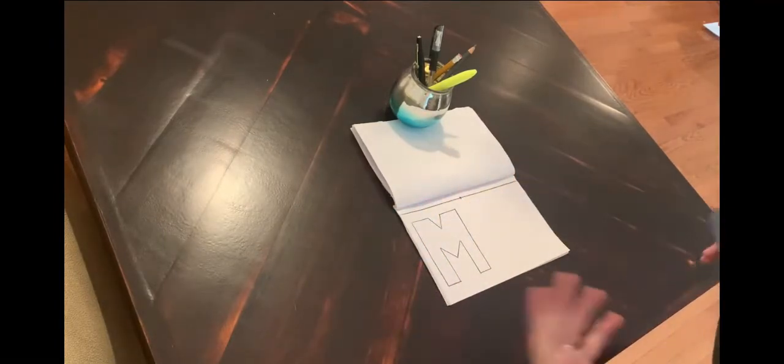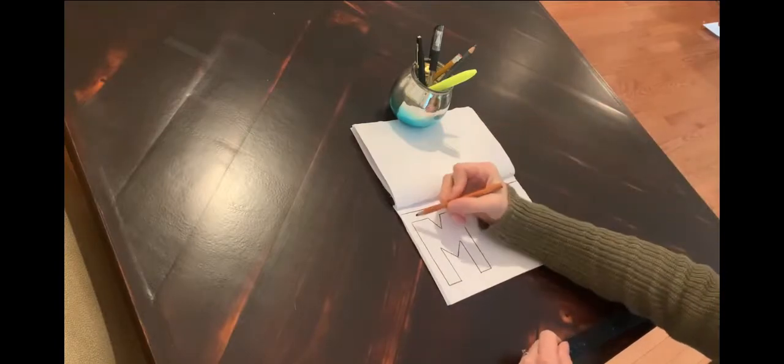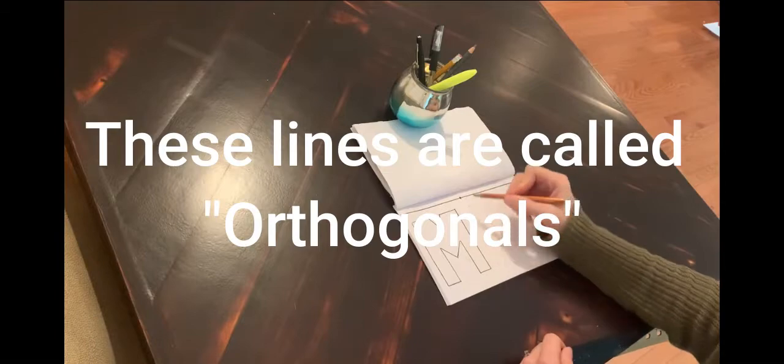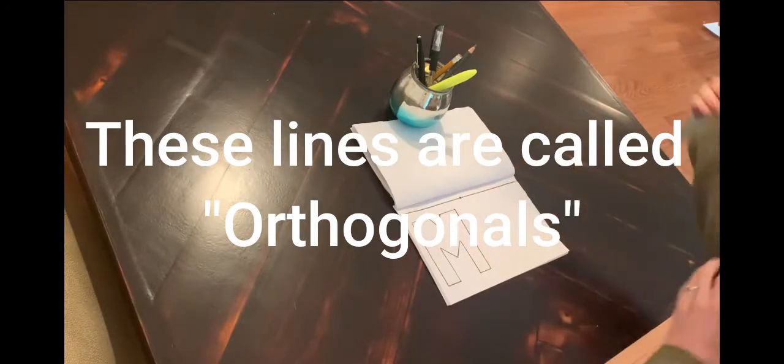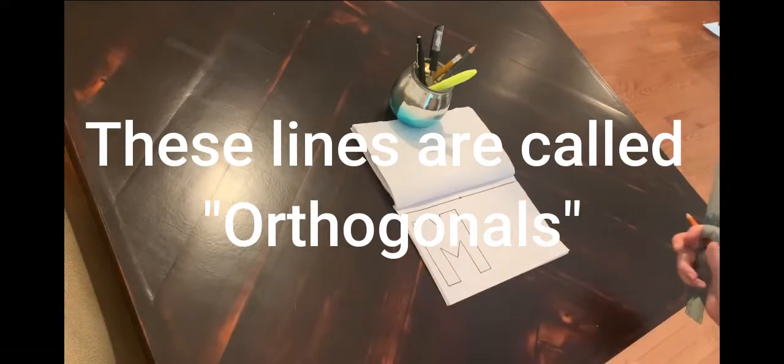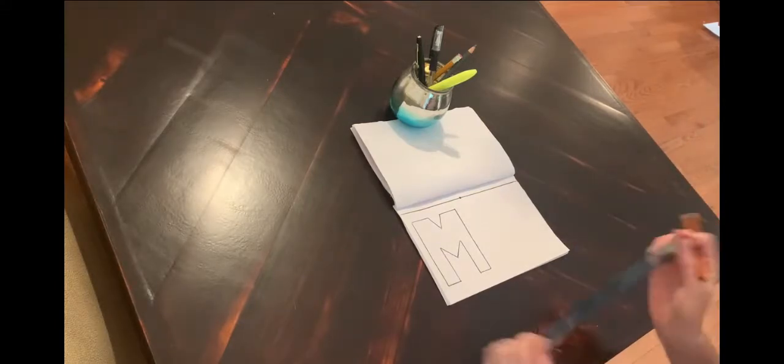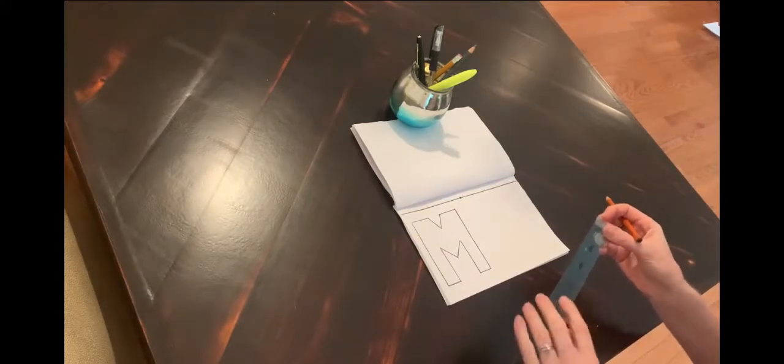Once you get your block letter done, then you need to connect each corner to this vanishing point right here. Some of them won't end up showing but some do. Just err on the side of connecting everything right now and then you can decide which ones to take out.